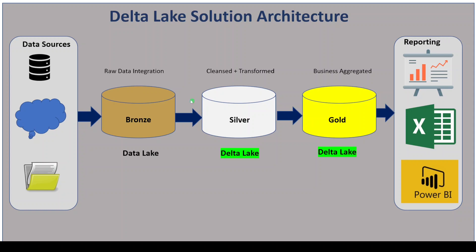In the next step, Databricks will consume the data from the Bronze layer, it will cleanse and do the basic transformations, and dump the data into the Silver layer. In the cleansing step, we generally perform duplicate handling, null value handling, and a few basic transformations. The cleansed data will be moved to the Silver layer. This is built on top of Delta Lake. After performing cleansing and transformations, we often need to query the data for validation or data quality checks, so this layer is queryable. We can perform any data warehouse-like operations in this layer.